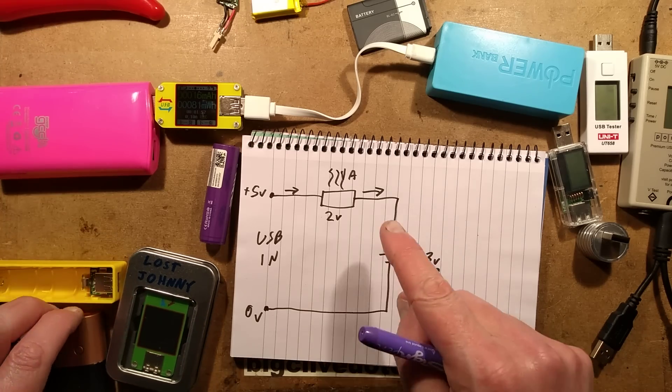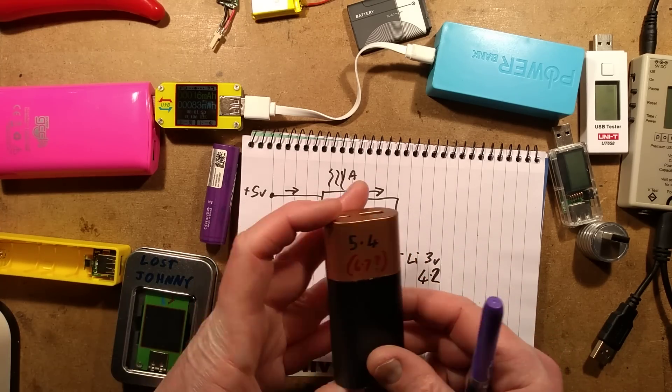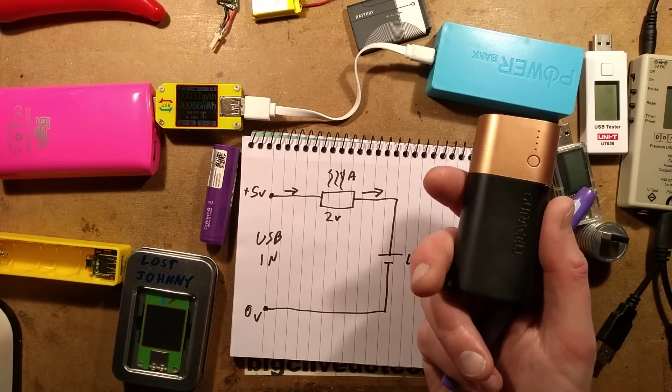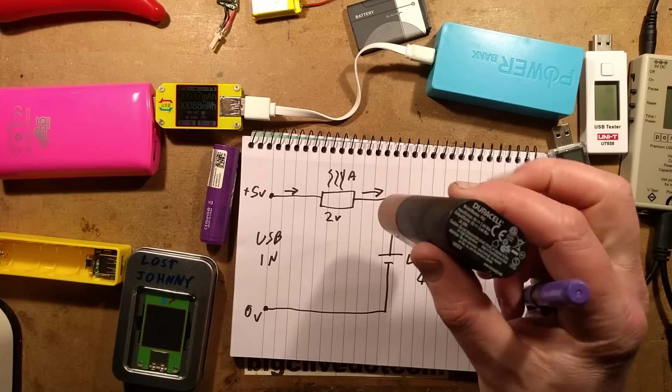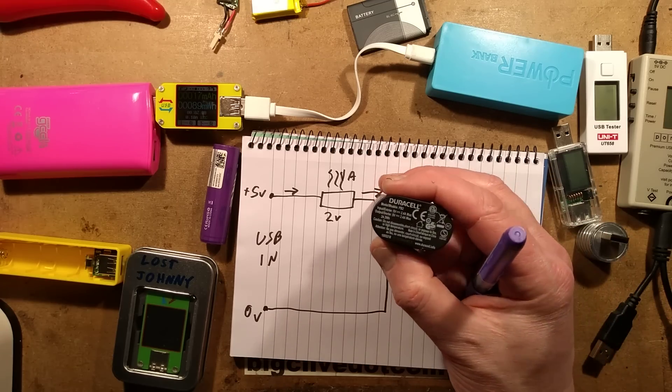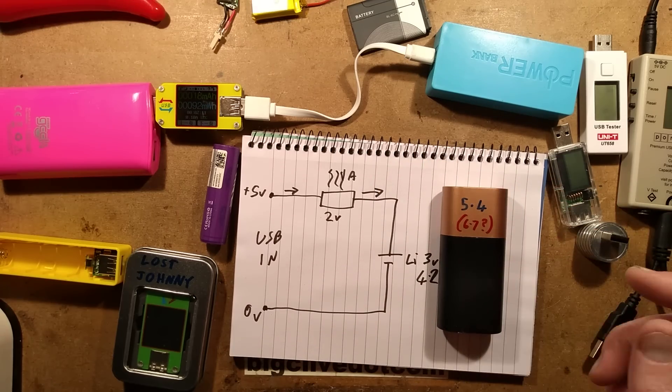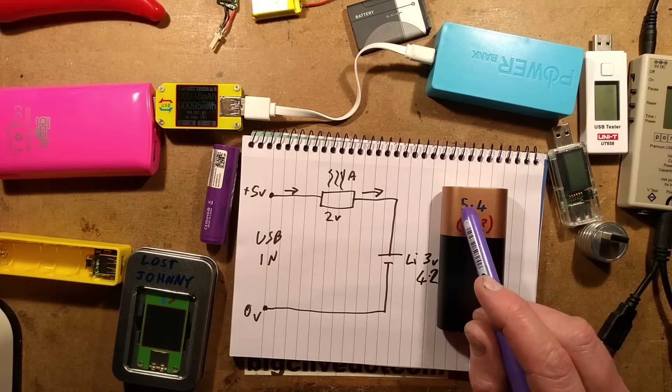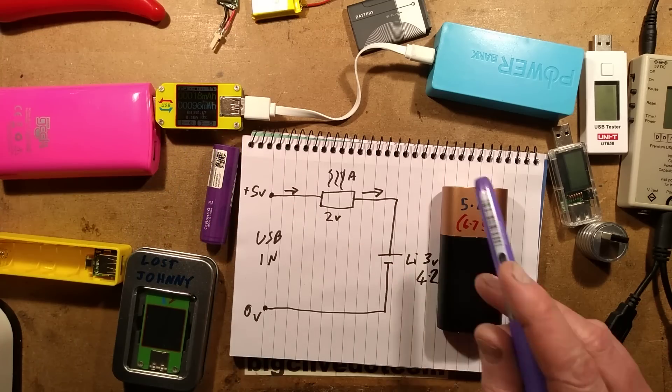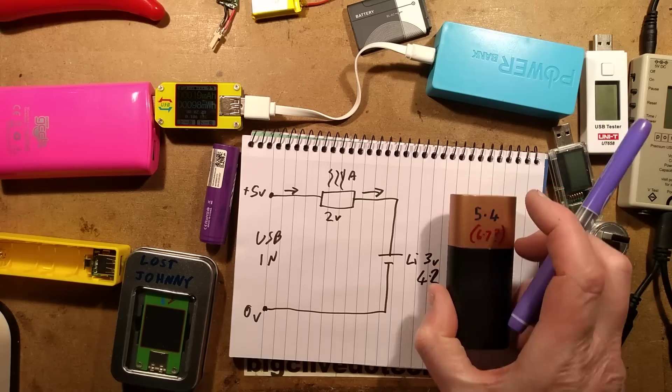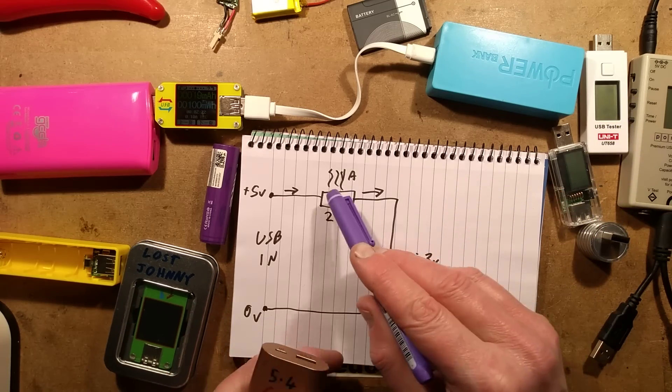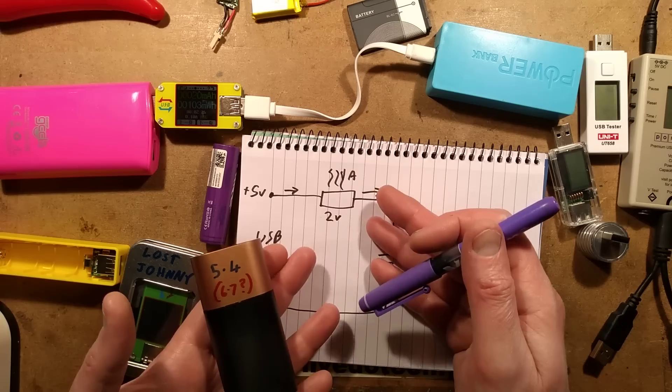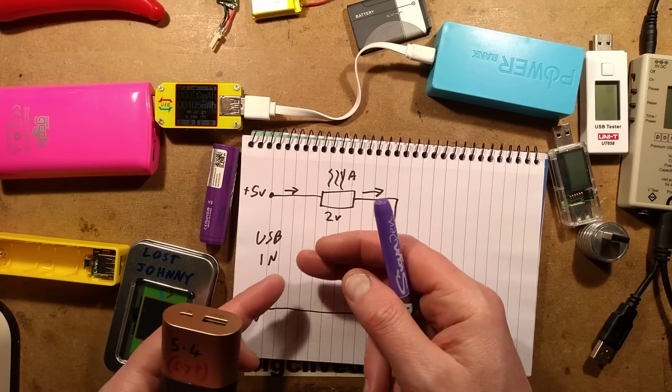The one exception is with something like this, a Duracell 2-cell power bank with a stated capacity of 6.7 amp hours. I charged it from flat using this and it showed 5.4 amp hours. In this case, I think that instead of just using a current limiting element, it will be using a switching regulator. It takes the 5 volts at 2 amps, which gives 10 watts.